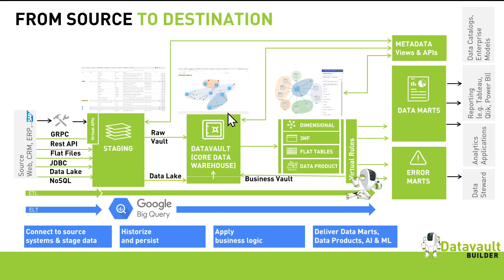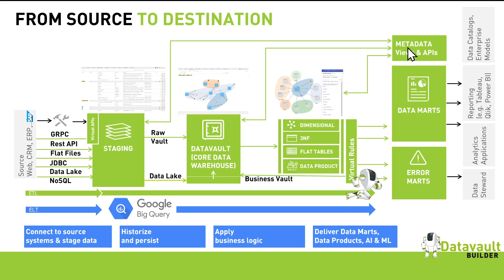Step one is loading the data model. Step two is staging the data. Step three, connecting staged data with the data model, is to create an output. Here we take the power of BigQuery by using the performance of the database. Based on your model, you can create different automated views — outputting data as a dimension model, third normal form, flat tables, or data products. On top of that, you can create virtual business rules, which capture SQL sent down to the database, with versioning and maintainability built in. You can publish the data to the good data layer or to error marts for capturing data problems. The full process is managed in one tool, creating metadata at every step, including views for integrating with your data dictionaries, and everything works out of the box.